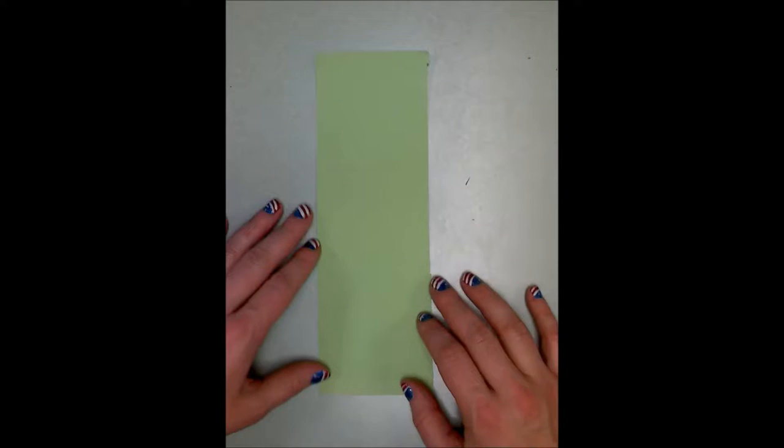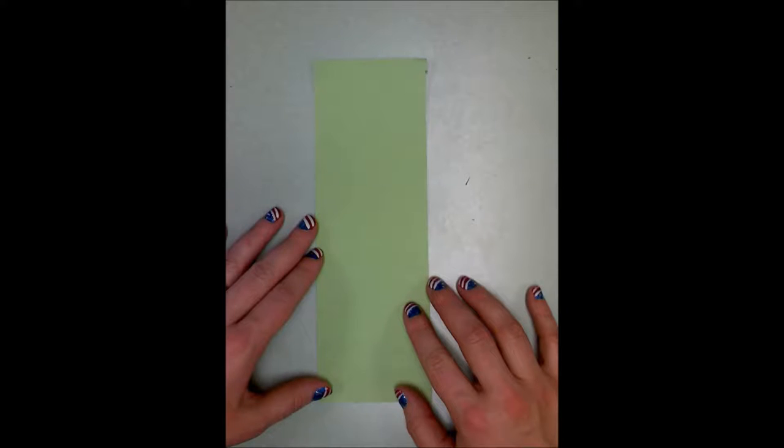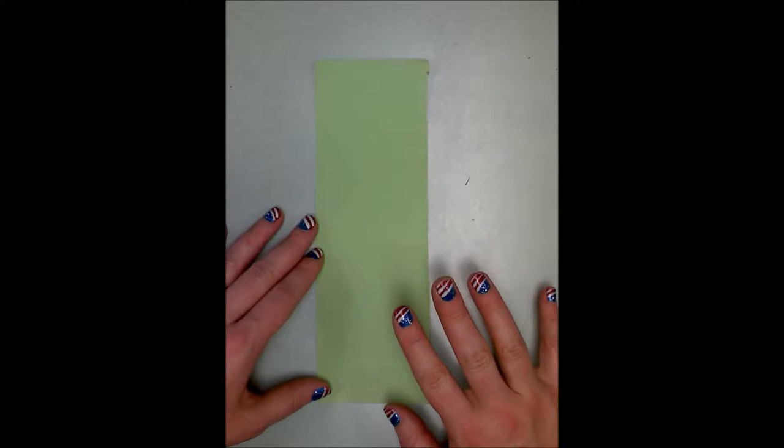Hi everybody, this is Mrs. Clam and today we're going to be doing a seven segment monochromatic value scale together. You're going to need a piece of paper. I'm using a piece of colored paper just so you can kind of see what I'm doing. This is construction paper.